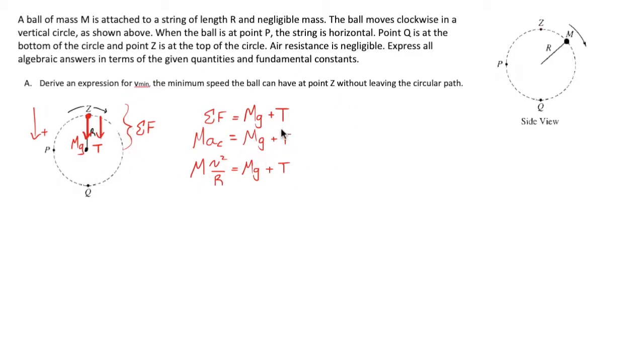But in part a, we want the minimum speed at point z without leaving the circular path. If you've played around with this, you know what happens if you swing the thing too slowly - the ball will fall and bop you on the head.